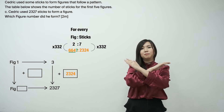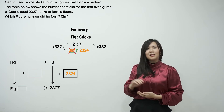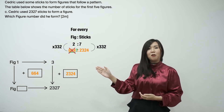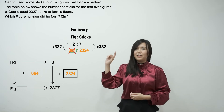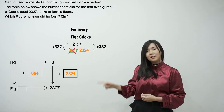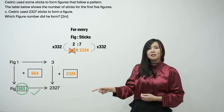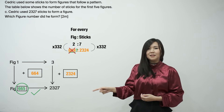Is the final answer figure 664? No! So with the box and arrow technique, we will remember to add 664 more figures to figure 1, to get figure 665 as the final answer to part C.